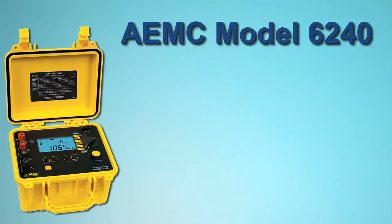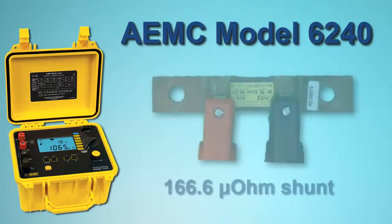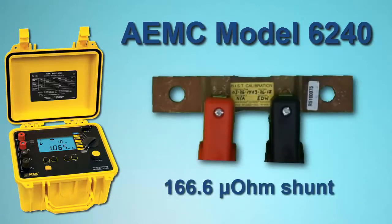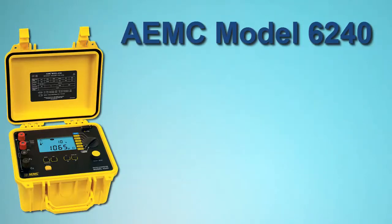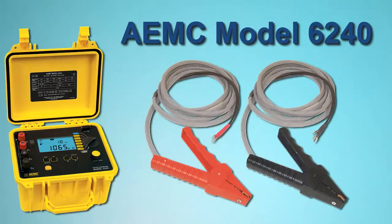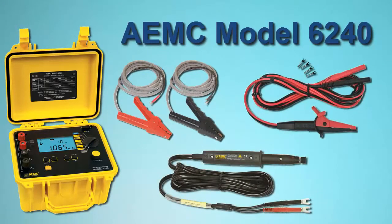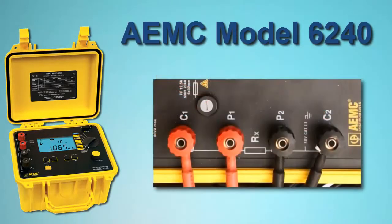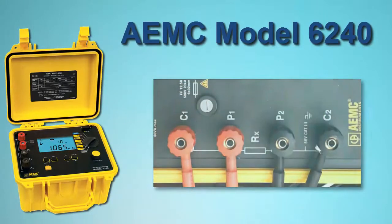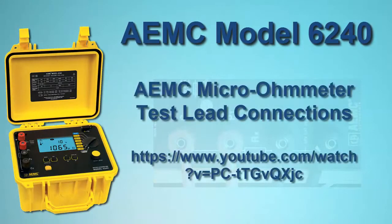For our demonstration, we will connect the instrument to a 166.6 micro-ohm shunt and run a one-minute test with a current of 10 amps. To make the connection, we will use HIPPO type Kelvin clips. The Model 6240 also accepts alligator and spring tip probes. Be sure all leads are correctly attached to the instrument's terminals, as explained in a separate AEMC video.